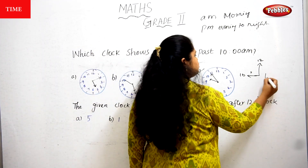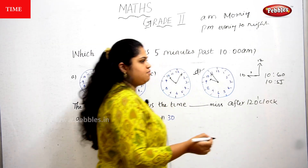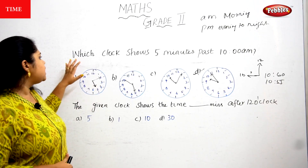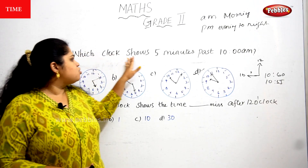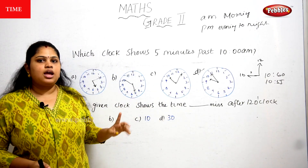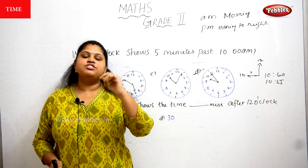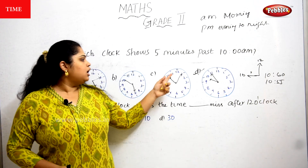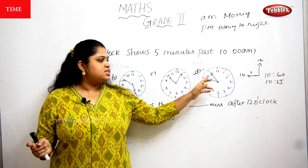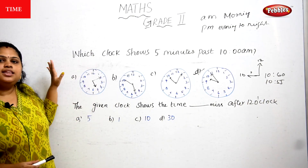So 10 AM means the small needle is at 10 and the big needle is at 12. '5 minutes past' means we rewind 5 minutes, so we can say 10:55. Past means the finished time, the time which was already done. So 10:55 is the finished time. Hope you all understand the first question.